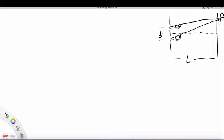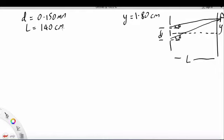Now, we also have the distance Y is 1.8 centimeters. So, the things we know: we have a distance is 0.15 millimeters, L is 140 centimeters, lambda is 643 nanometers, and we have Y is 1.8.